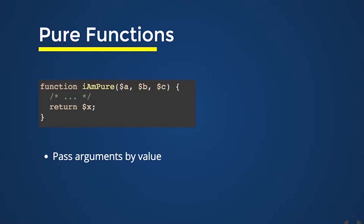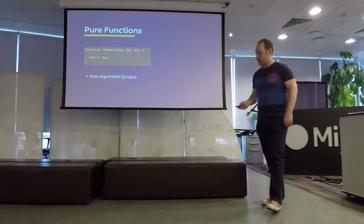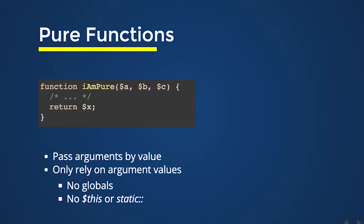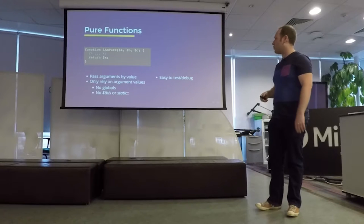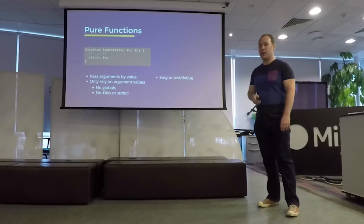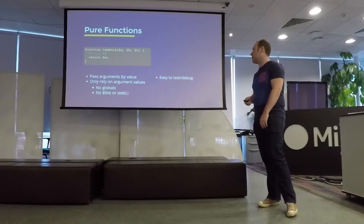There are some rules to writing these kind of pure functions. The first is that you can't cheat and pass variables by reference, you can only pass by value. And you can only rely on those arguments that were passed in — you can't rely on globals, you can't rely on any object properties or static class properties. And that's quite a big restriction, but this kind of thing allows you to write code that's really easy to test and really easy to debug.